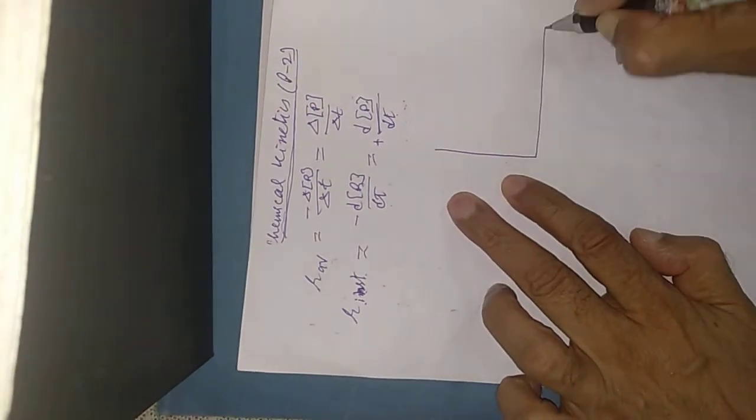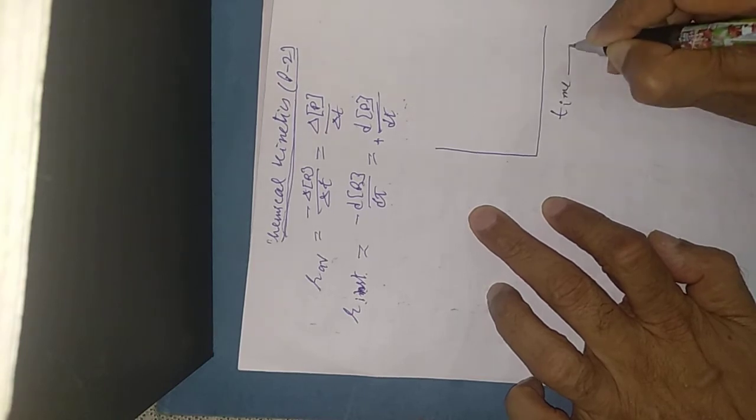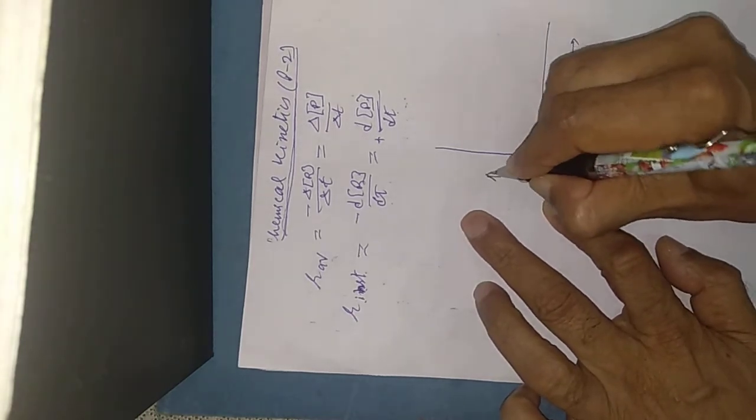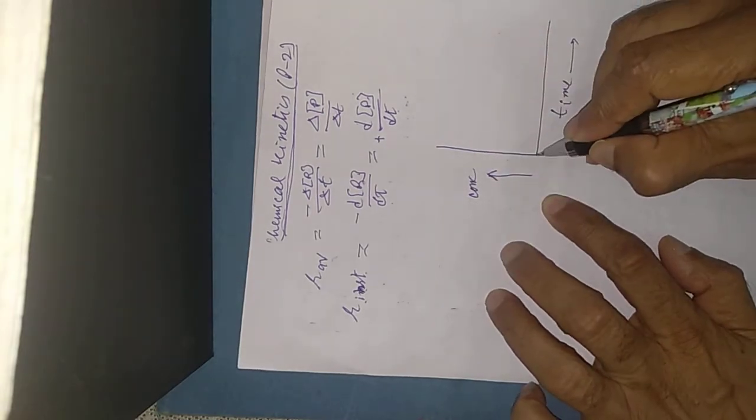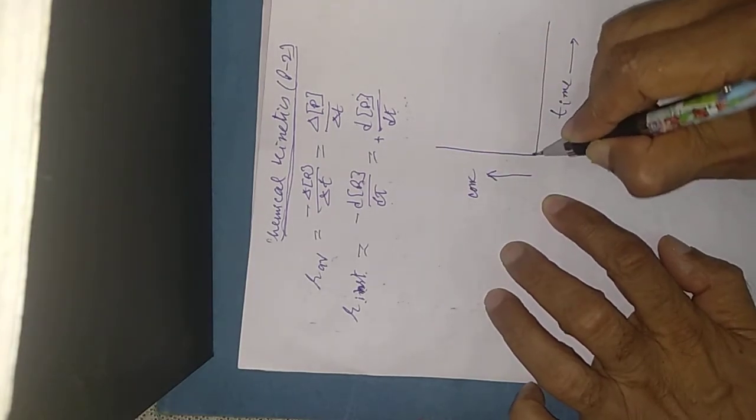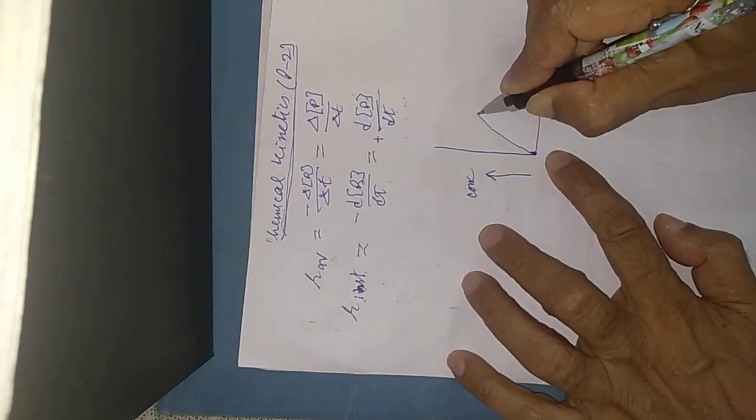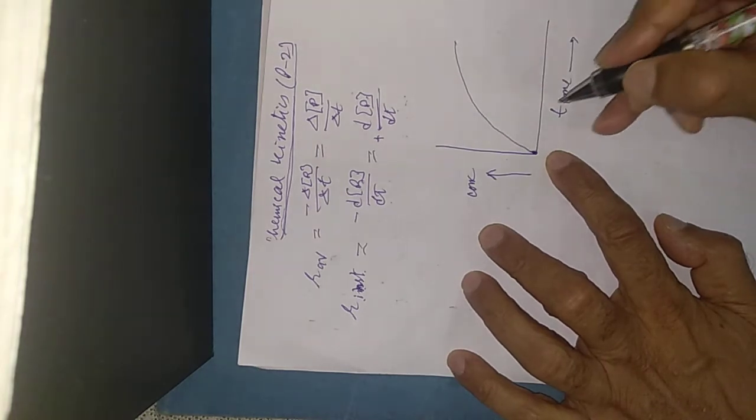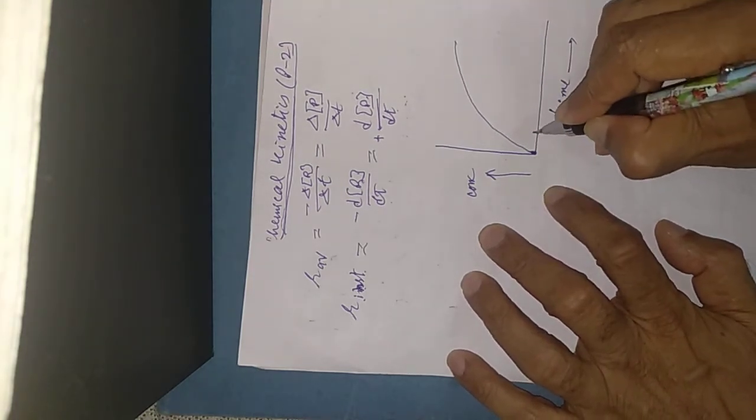Now I can explain this graphically. Suppose we have a graph. This is time and this side for concentration change.